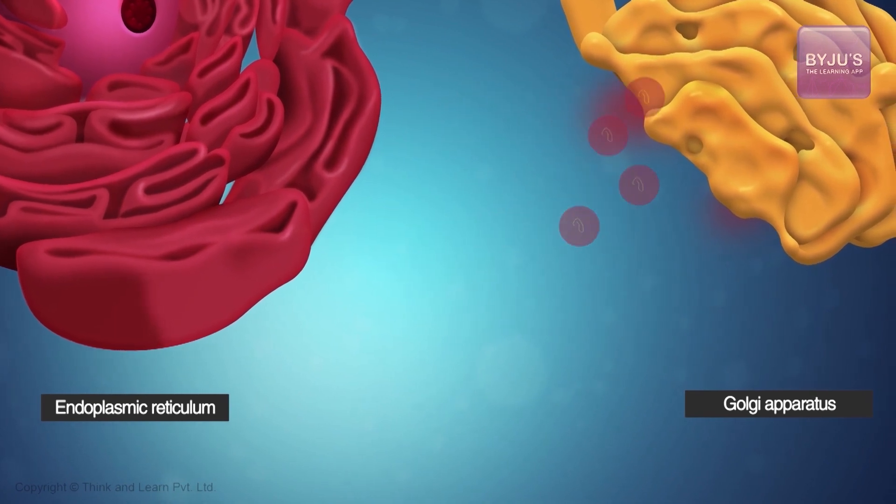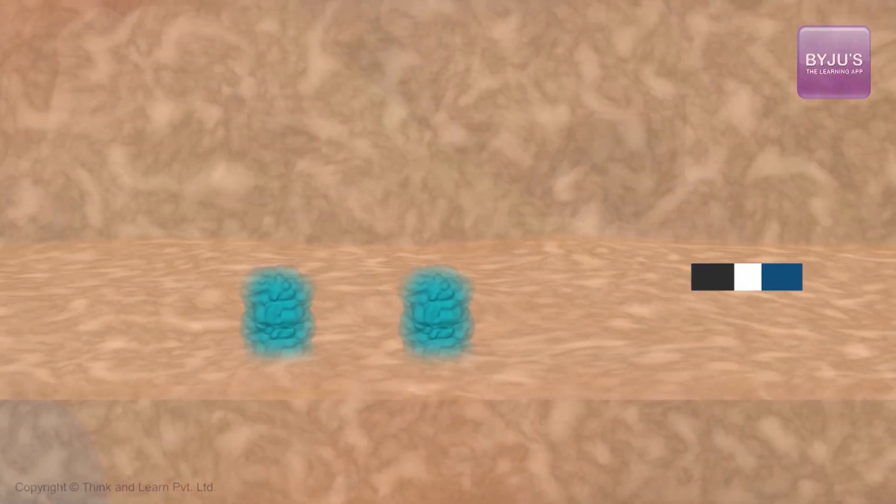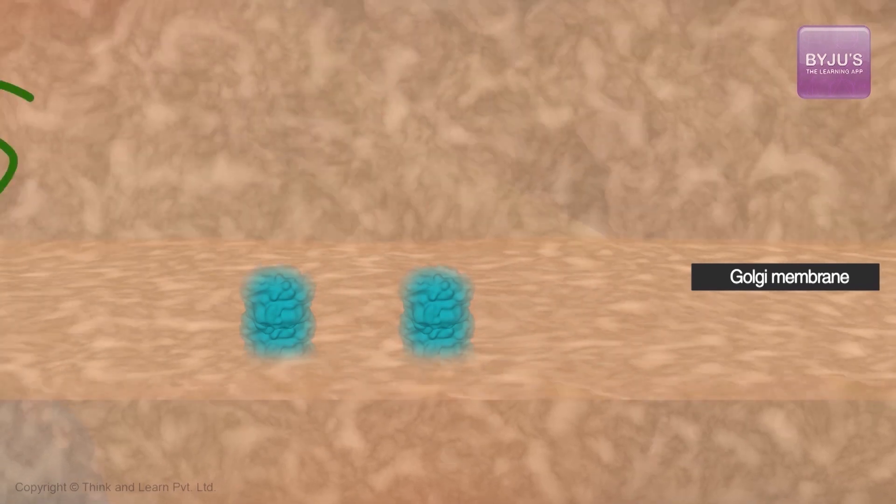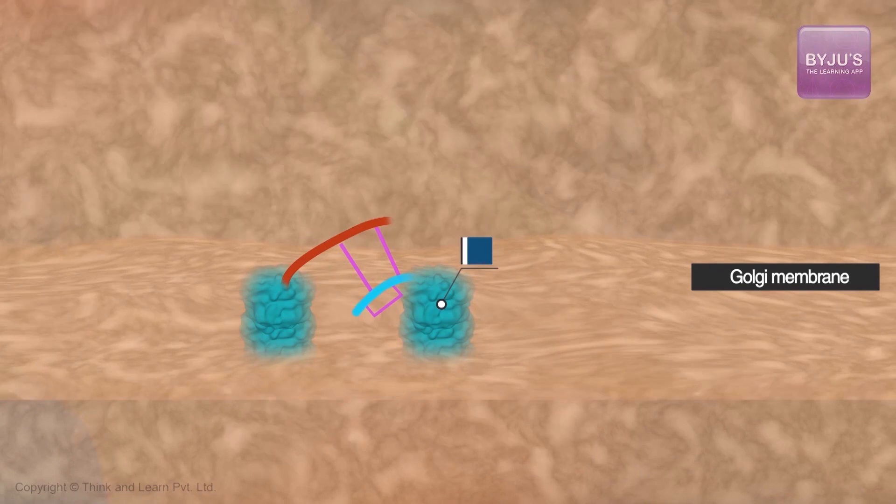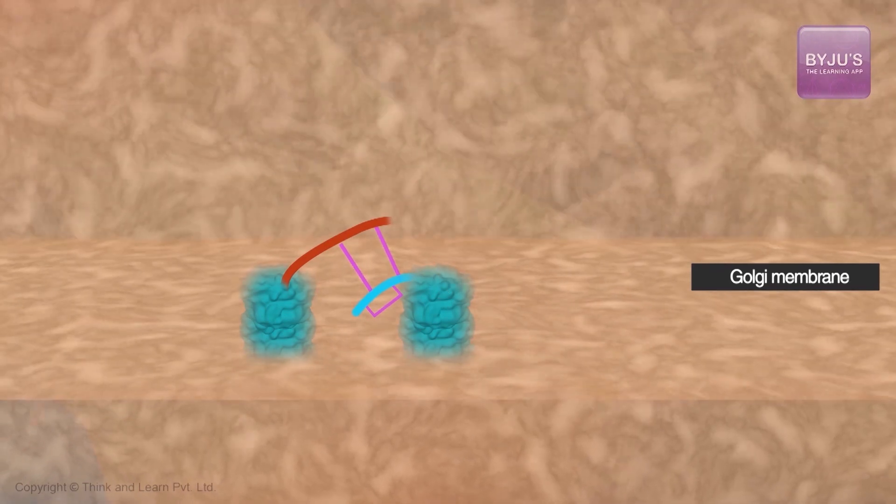Then, the central part of the molecule, the C peptide consisting of 35 amino acids is separated by membrane-bound enzymes, proteases, in the Golgi complex of the cell.